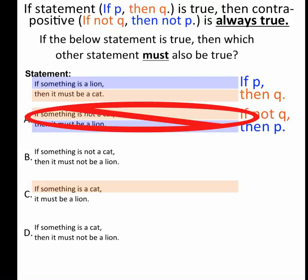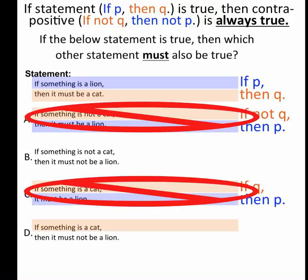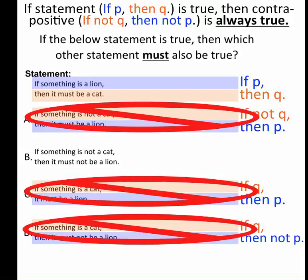If something is a cat, well, that's if-q, there's no not there. So I know that this isn't a contrapositive, then-p, not my contrapositive. And this one also starts with if-q, and this one is then-not-p, but that's again not my contrapositive, which is if-not-q, then-not-p. So that's not true.